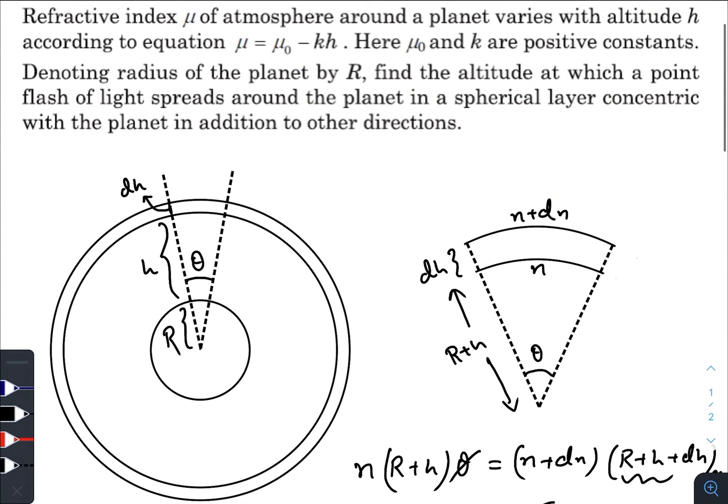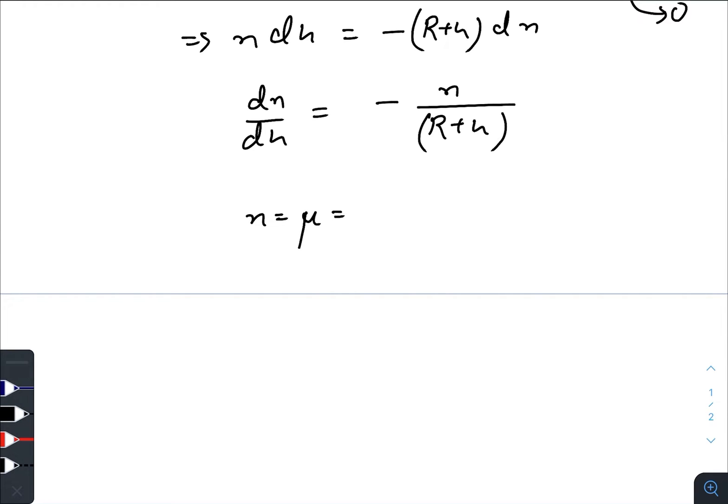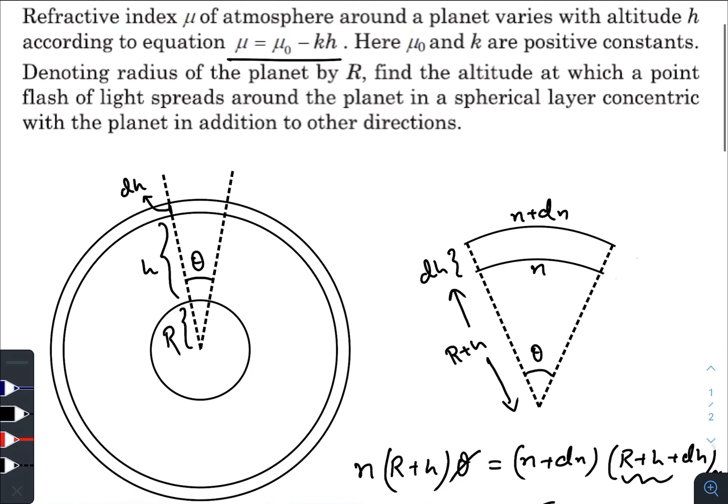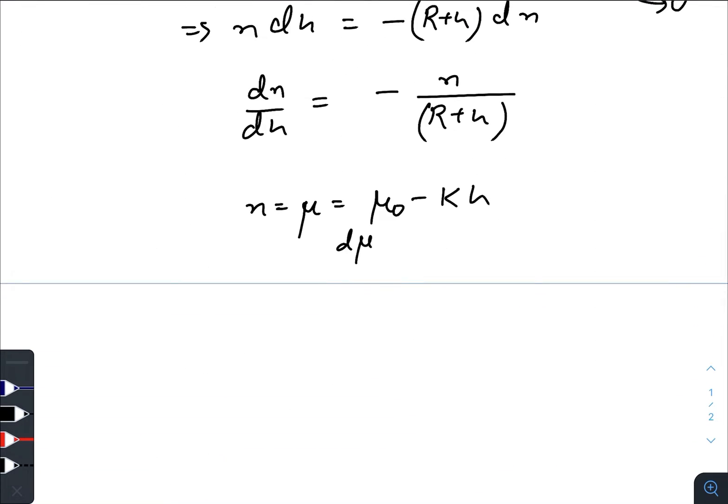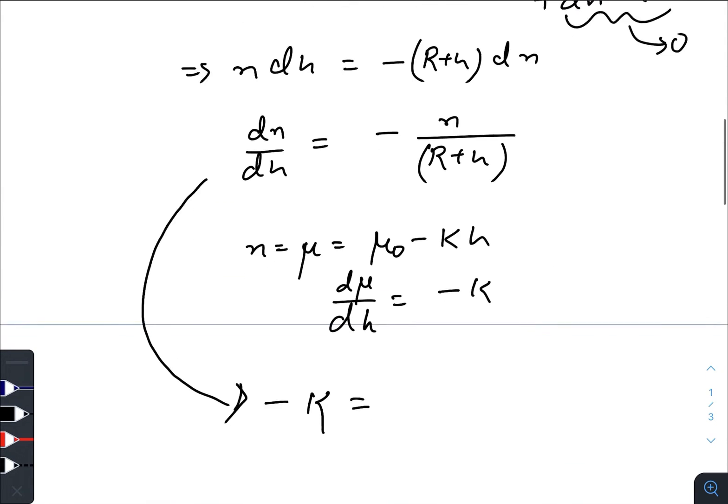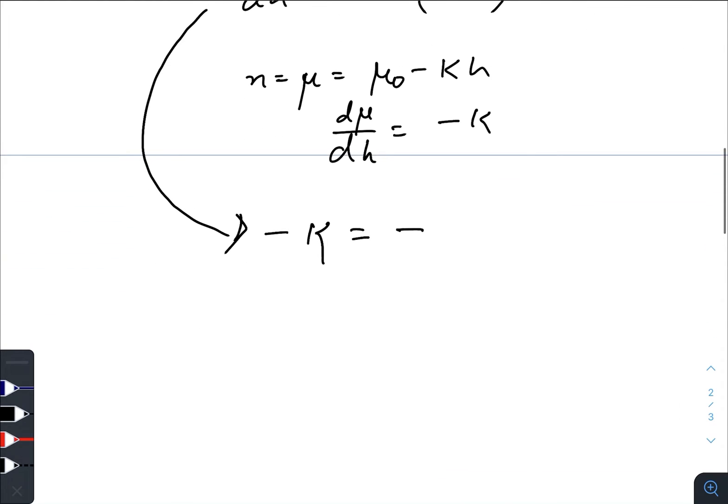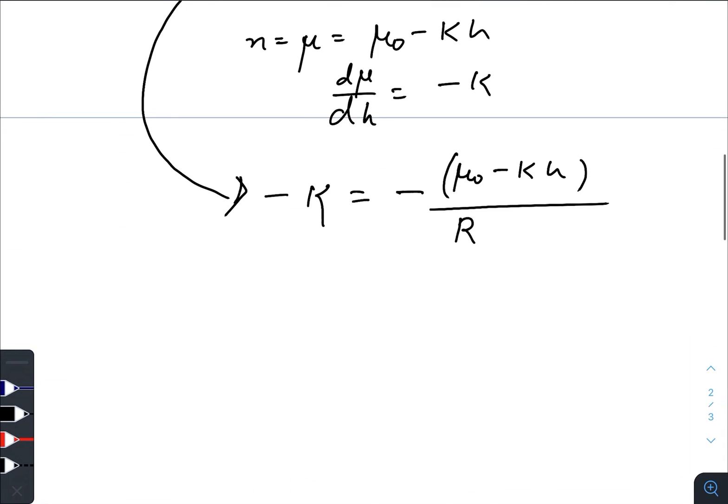In our question they have already provided n, they have written it as μ. So n equals μ = μ₀ - kh. So dμ/dh becomes -k. So here we will have -k = -(μ₀ - kh)/(R + h). That would be (μ₀ - kh) divided by (R + h).